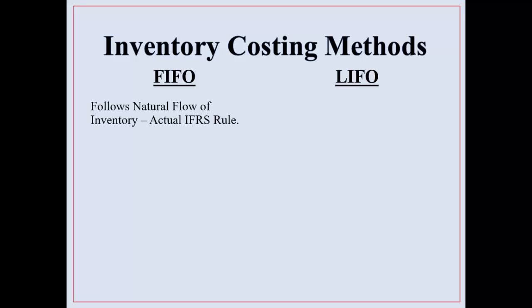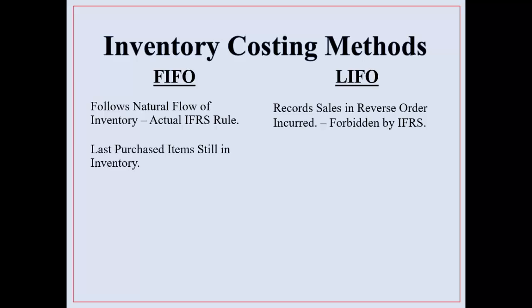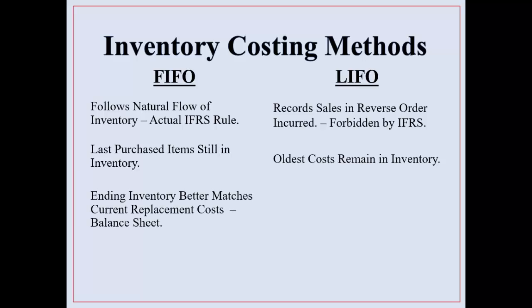FIFO follows the natural flow of inventory and actually better follows the way IFRS rules are written. LIFO records sales in reverse order incurred, and it is forbidden by IFRS. With FIFO, the last purchased items still sit in your inventory — that's our current economic cost, what something costs today. Your older costs are in cost of goods sold. With LIFO, it's just the opposite: the oldest cost remains in inventory because the new items being purchased today are recorded as sold right away.